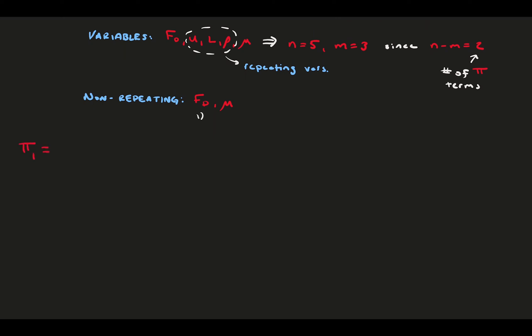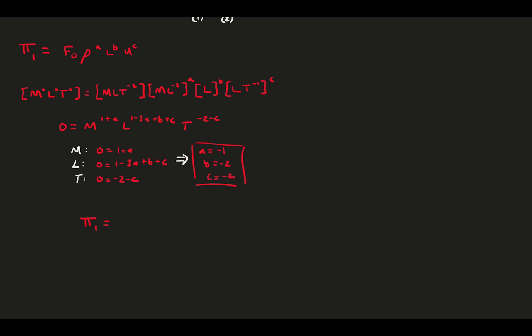First, we consider the drag force in the first pi parameter. Set up the general equation for pi. Since at this point you're familiar with the solution process, we'll solve it in double time. Write the equation for the base dimensions and the exponents. Distribute the exponents and gather all the like base dimensions. Solve the system of equations for the exponents. Rearranging, we see that pi 1 is fd divided by rho u squared l squared. In aerodynamics, this is very similar to the drag coefficient, a common dimensionless parameter that defines the foil performance.